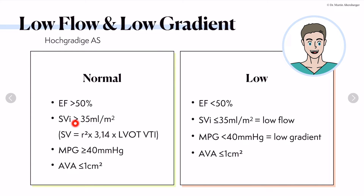Another pathology we need to discuss when talking about aortic stenosis is the so-called low-flow, low-gradient aortic stenosis. We are talking about severe aortic stenosis, and we have to differentiate the normal from the low. The normal is an ejection fraction above 50%, a stroke volume index above 35 milliliters per square meter, a mean pressure gradient above 40 mmHg, and an aortic valve area below one square centimeter.